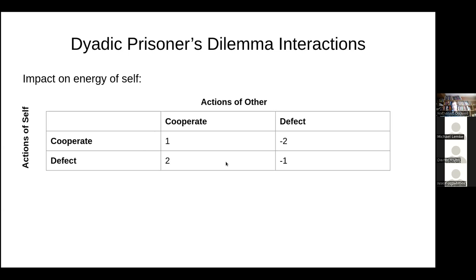From the perspective of a single transaction, it seems like it's always best to defect — just shield yourself. But the ironic, pessimal outcome of that is that both parties are incentivized to defect always, ending up at minus one where they could have gotten one. Both could be better off in a win-win situation if they cooperated, but instead they're losing because both think their short-term advantage is to defect.